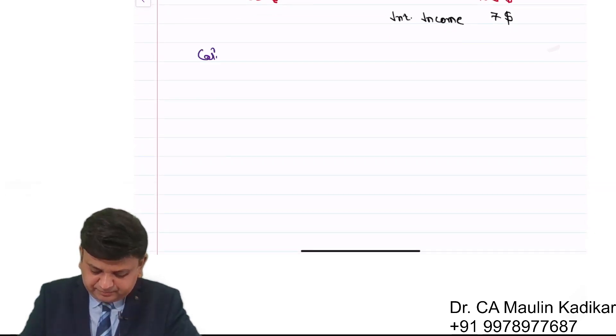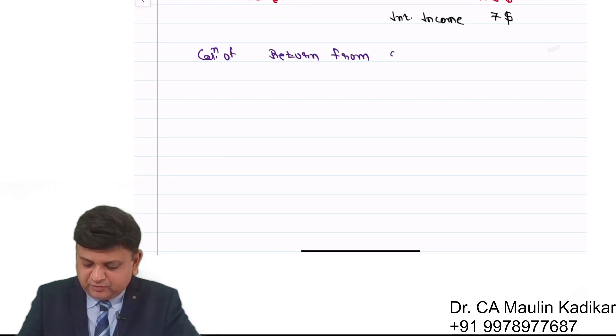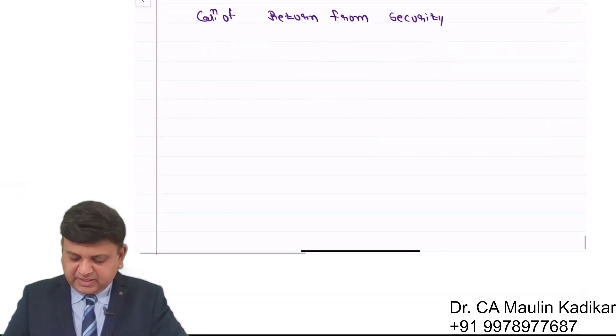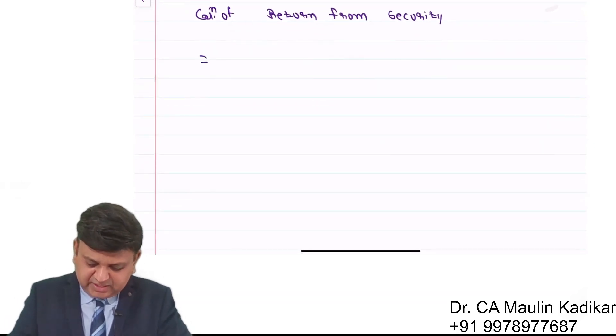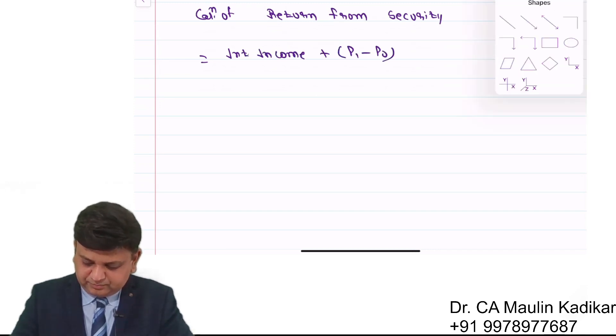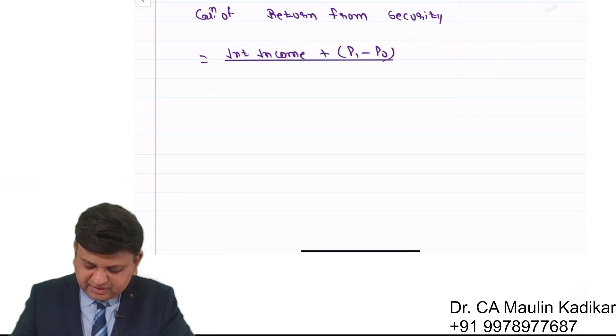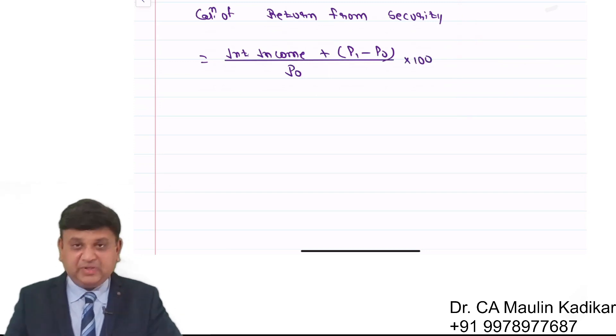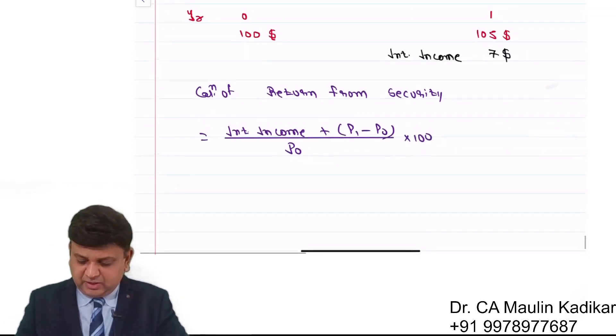Calculation of return from security. It is calculated as interest income plus P1 minus P0 divided by P0 into 100. It is $7.